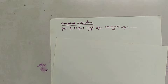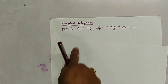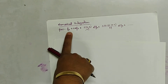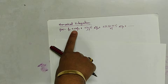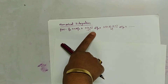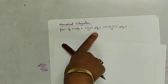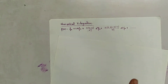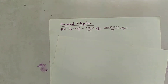First of all let us revise the Newton forward interpolating polynomial. It was: f(x) equals f0 plus s·Δf0 plus s(s−1)/2! · Δ²f0 plus s(s−1)(s−2)/3! · Δ³f0 plus s(s−1)(s−2)(s−3)/4! · Δ⁴f0, and so on up to n terms.